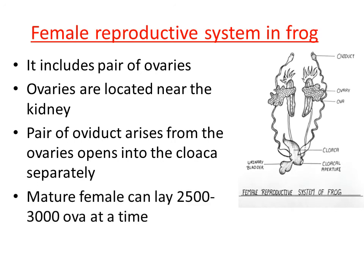The oviduct carries the eggs released from the ovary and sends them to the cloaca separately. The number of eggs produced within each ovary is nearly 2500 to 3000. The ovary releases these eggs, they are collected by the oviduct, and the oviduct carries them towards the cloaca. Cloaca has a common opening called the cloacal aperture, which is the common opening for excretion of solid undigested waste, urine, and eggs in case of the female frog.